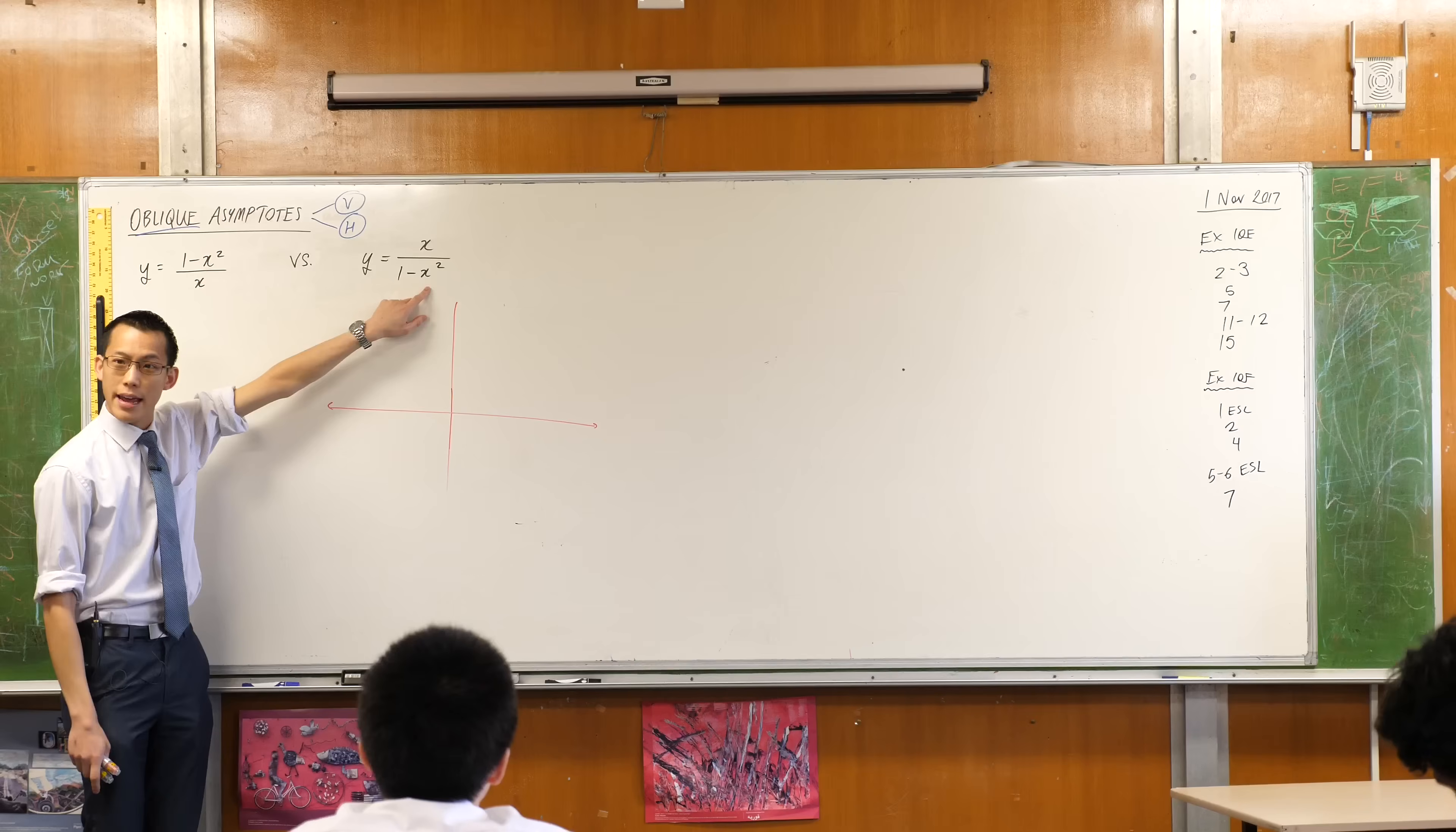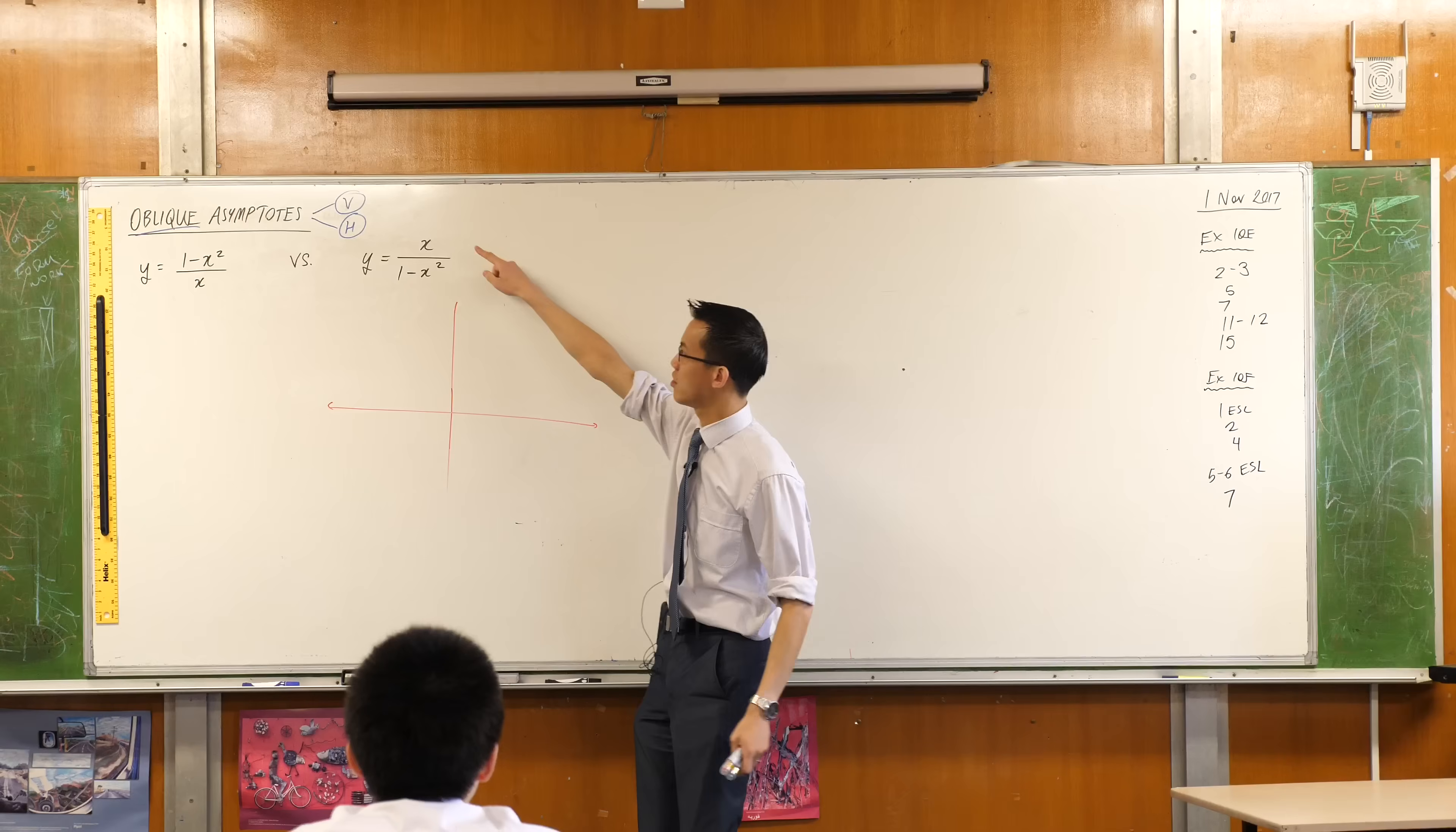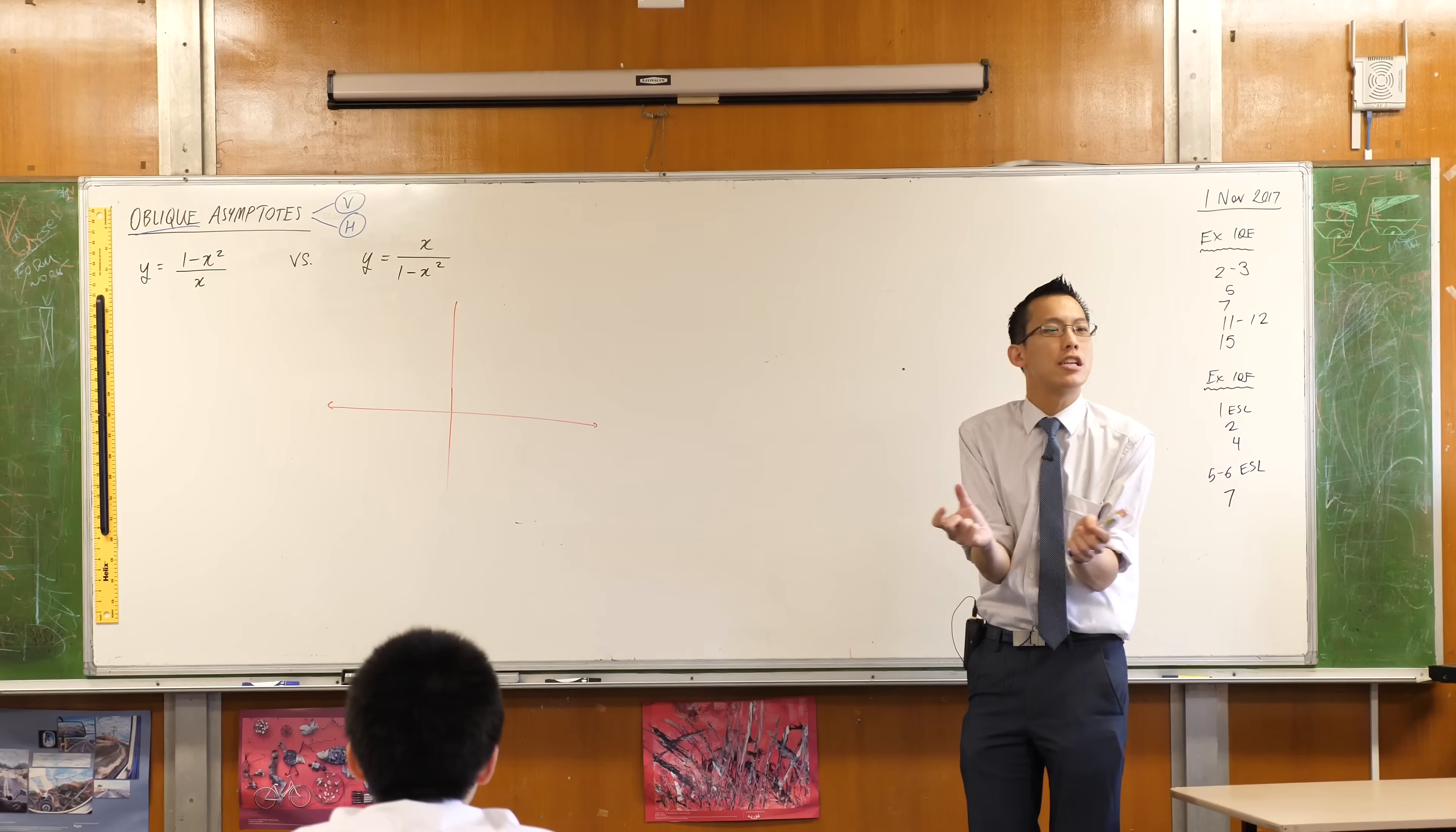So the denominator's power is, well the biggest power is two and the biggest one up here is one. So as x gets bigger and bigger because that's what horizontal asymptotes are about, like the edges, the extremities. As x gets huge, the numerator gets huge but the denominator will always get huger. That's the technical term, okay? So the denominator takes over, right? Does that make sense? So since the denominator takes over, it's going to get much bigger so the whole thing is going towards zero.